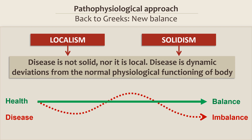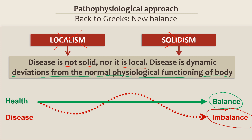Almost immediately after the emergence of the pathological approach, its opposition appeared — the pathophysiological approach. Pathophysiologists argued that disease is not a local solid pathology that settled in the body as a separate and unnatural creature. By their point of view, a diseased organism is the same organism, but with the deviation of some internal processes. So health, according to them, was the correct balance of physiological processes in the body, and disease was viewed as physiological imbalance, which only in some cases manifests itself in specific organs in the form of visible pathology as a result of malfunctions of internal processes. Thus, proponents of this approach revived theories of balance and holism, but based them on a new scientific understanding.